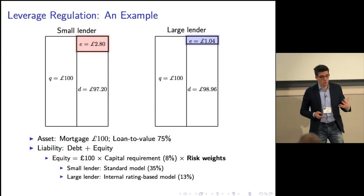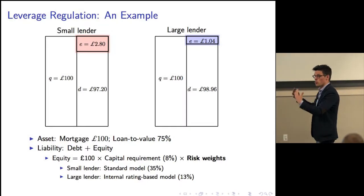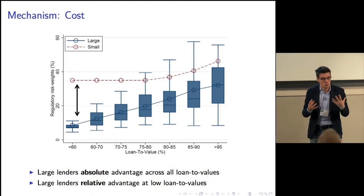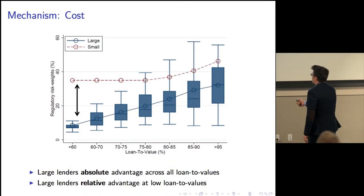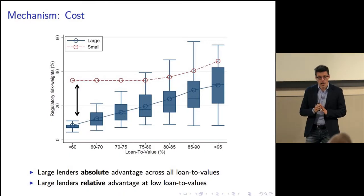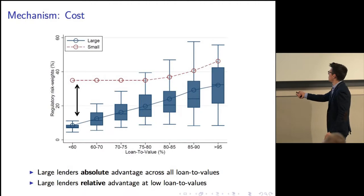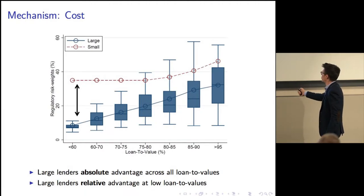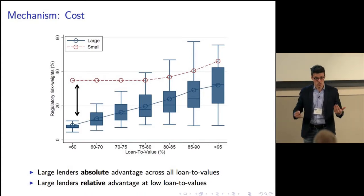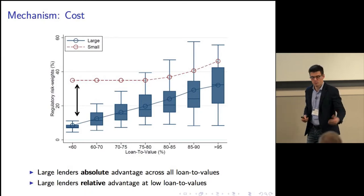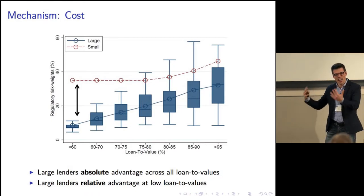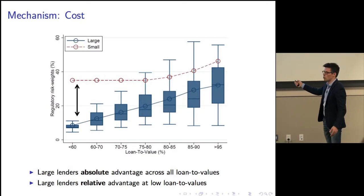Why do we care about this difference? Because this difference in cost potentially affects prices and equilibrium outcomes. Looking at the data for the UK, what I plot is the risk weight as a function of loan-to-value. The small lenders in red have a risk weight set by the regulator — flat at 35 percent until an LTV of 80 percent and then going up according to a regulatory formula. In blue, the large lenders show output from the internal ratings-based model, and what you see is that the large lender has an absolute advantage throughout the whole risk distribution, with a comparative advantage particularly for low loan-to-value products.